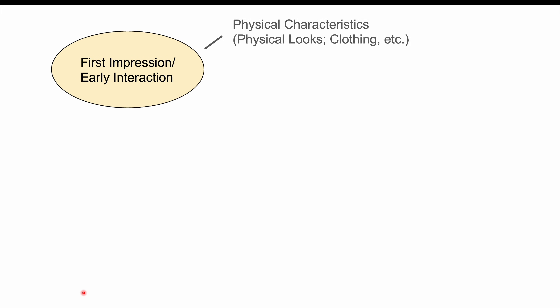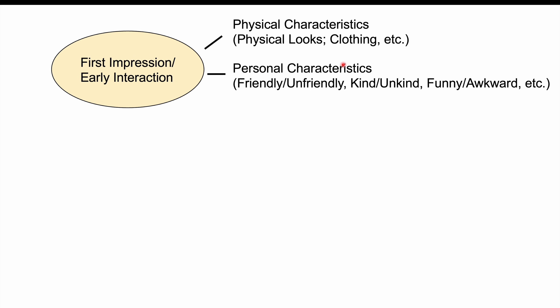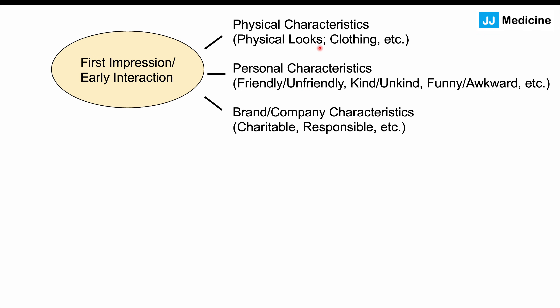So how does the halo effect actually occur? When you're going through day-to-day life, you'll be presented with certain information. For instance, if you meet someone for the first time, there's a first impression or early interaction. That person has physical characteristics — their looks or clothing — and personality characteristics: they can be friendly or unfriendly, kind or unkind, funny or awkward. And if it's a brand or company, they may present characteristics like being charitable or responsible.